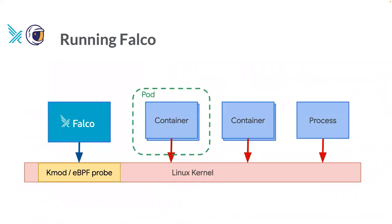Just to show a diagram of a very simple Falco deployment: normally you run Falco directly on your Linux kernel via a kernel module or eBPF probe. One instance of Falco can be installed as a container, a DaemonSet in the case of Kubernetes, or a regular process on a machine, whichever fits your production environment. It captures every event from all containers, all Kubernetes pods, and every process running on the system.